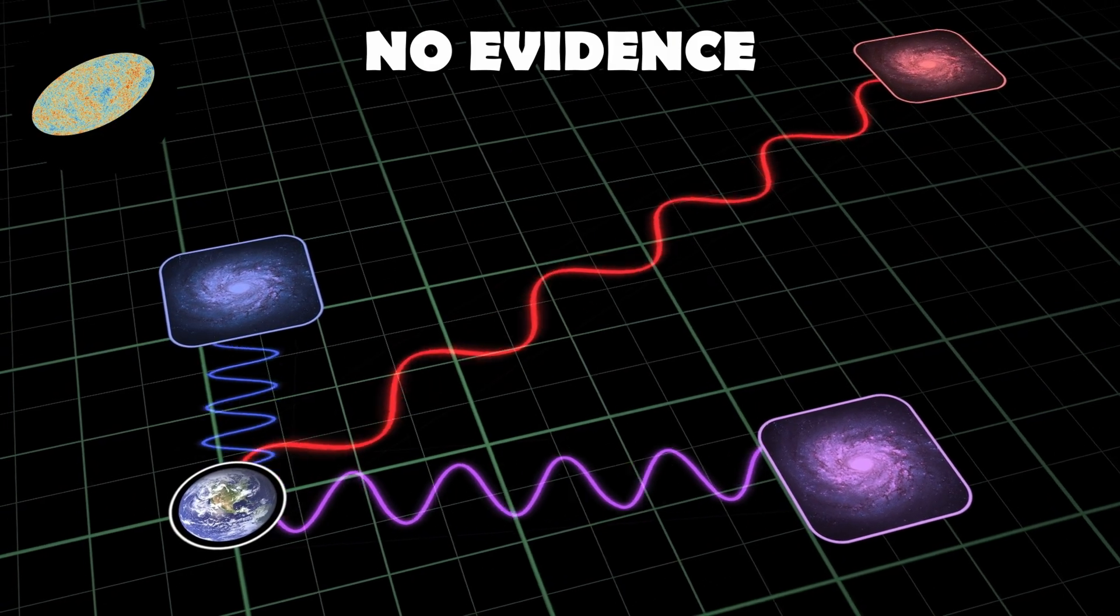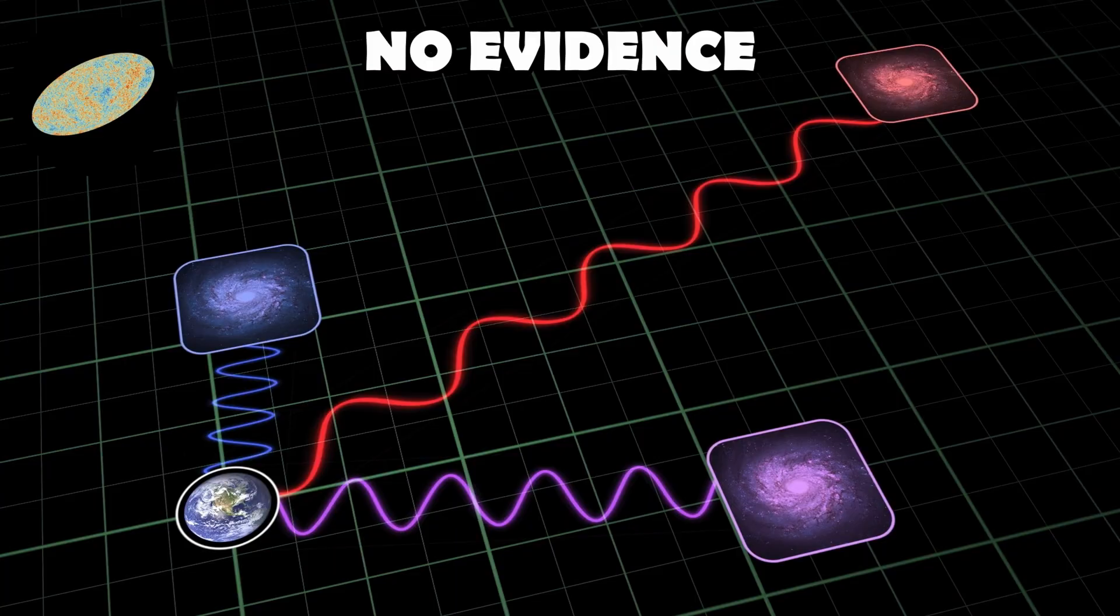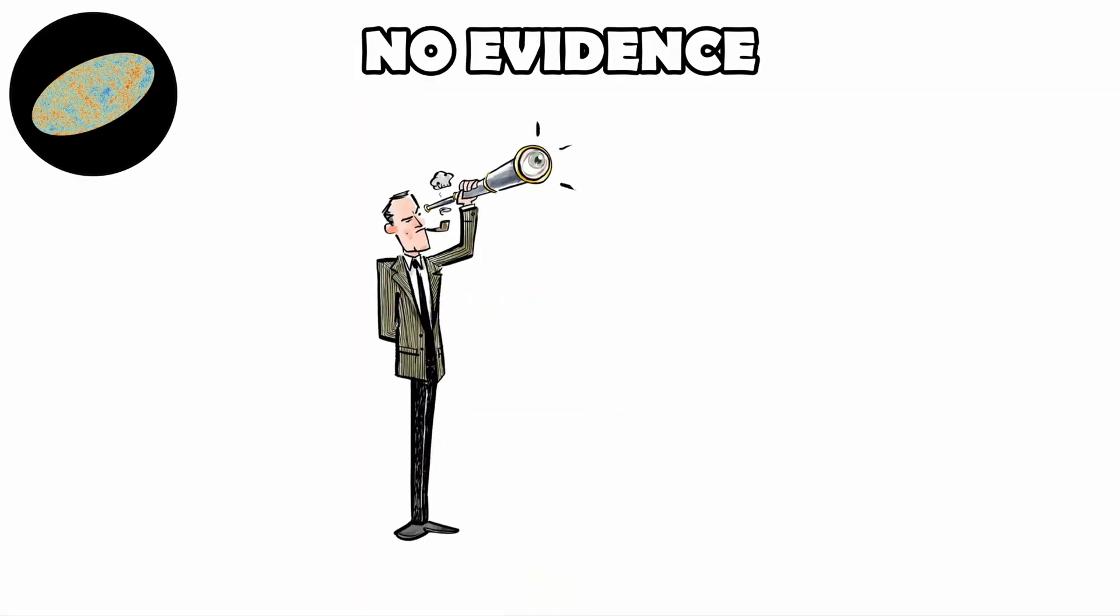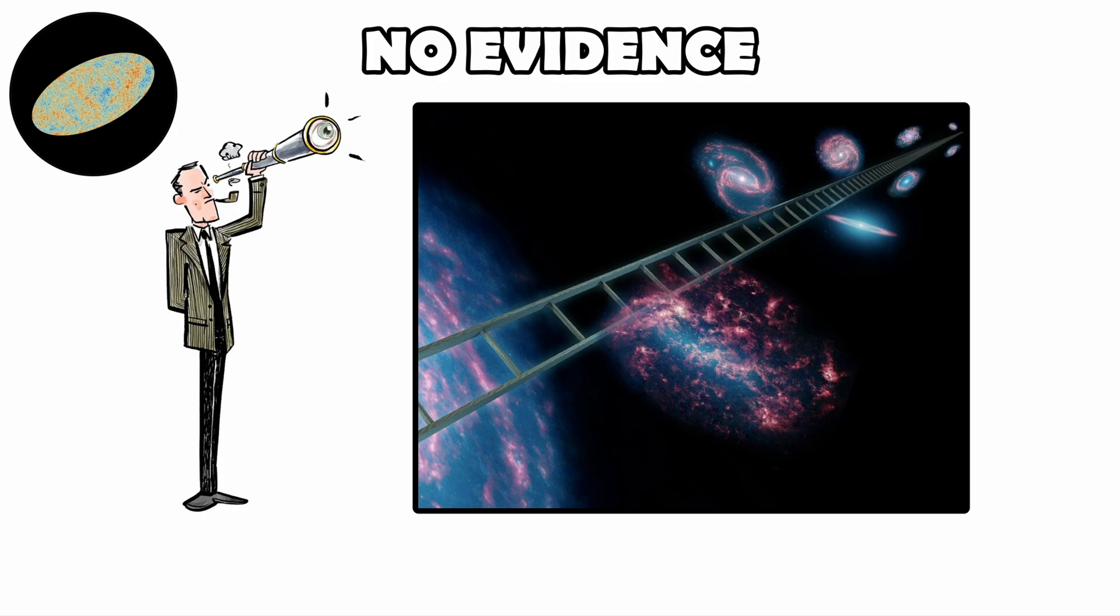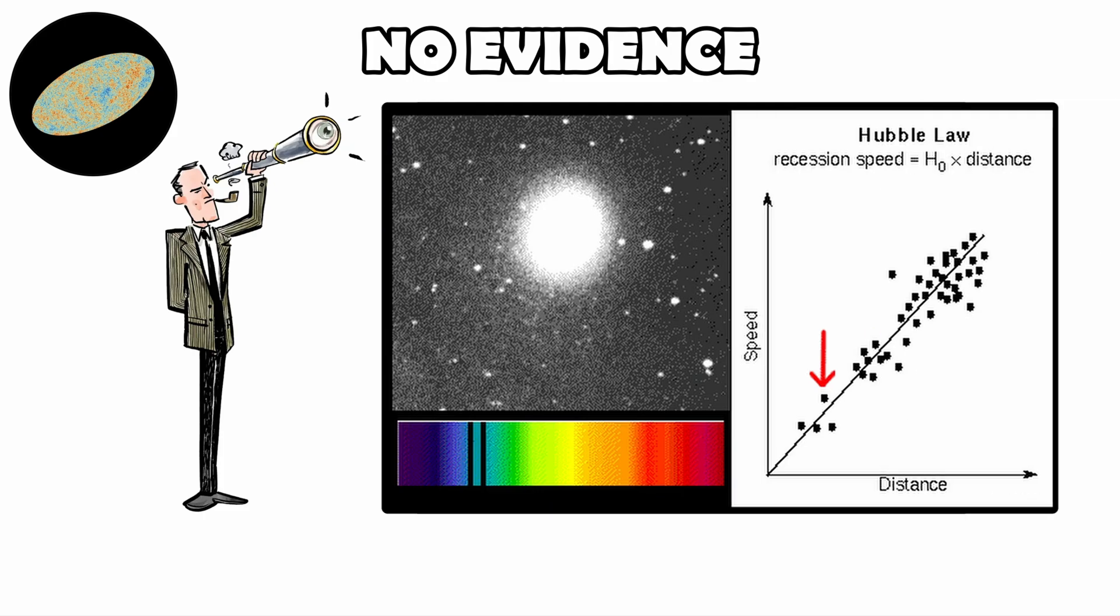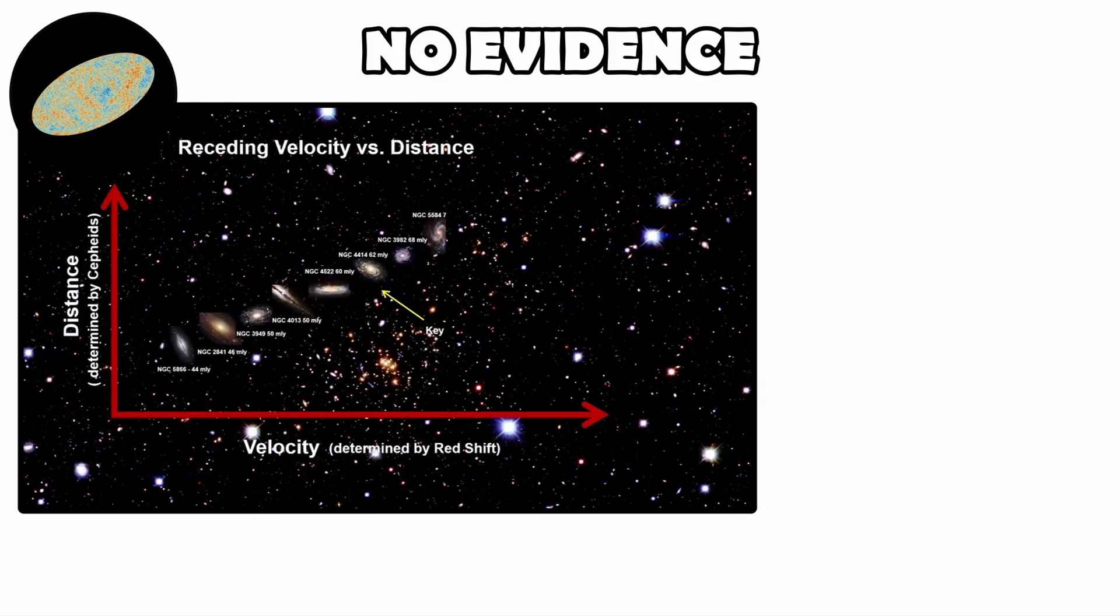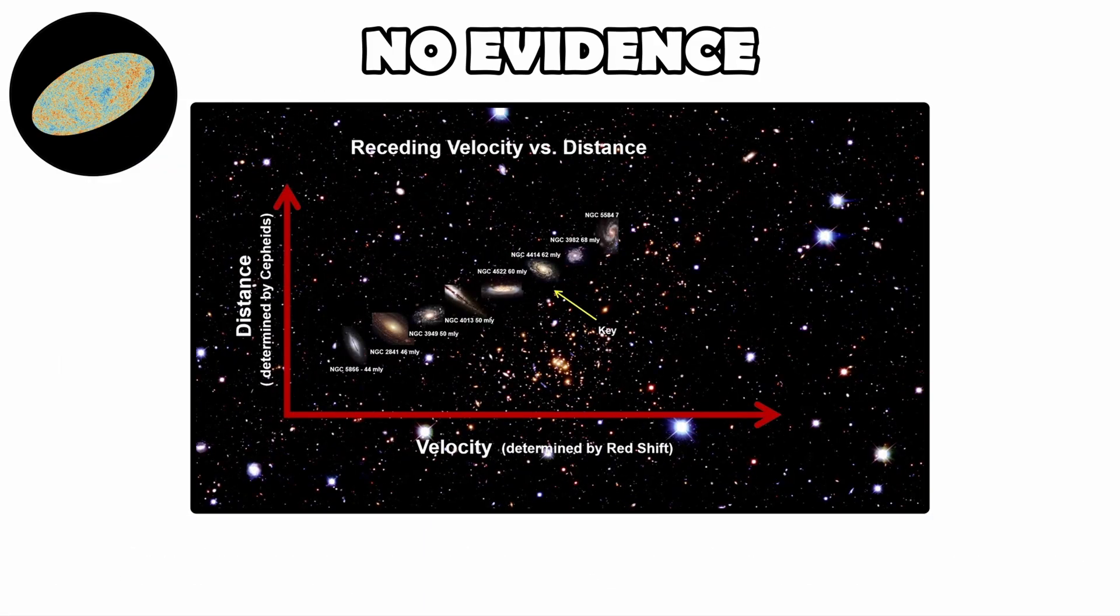One of the strongest pieces of evidence is the observed redshift of galaxies. When astronomer Edwin Hubble first measured how galaxies' light shifted toward longer wavelengths, he discovered that the farther away a galaxy is, the faster it is receding. This directly matches predictions from an expanding universe.